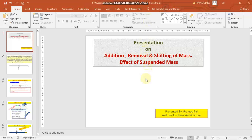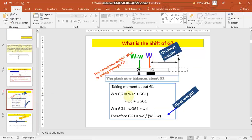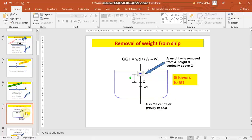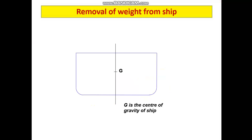Hello everyone. We are currently discussing the formula for addition, removal and shifting of mass on board a ship and its effect on stability. We have already seen that when a mass is removed from a vessel, we use the formula: the shift in center of gravity GG1 is w into d by W minus w. When adding a mass, GG1 equals w into d by W plus w. Let us now look at how these formulae are applied when a mass is added or removed.